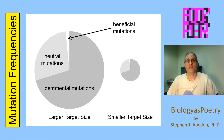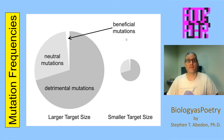From the perspective of evolutionary biology, mutations can be differentiated into three different types. There are the beneficial mutations that increase the fitness — that is the potential to survive and replicate of an organism — and detrimental mutations that lower that fitness.